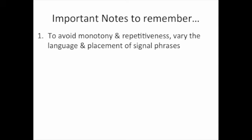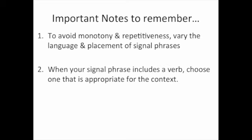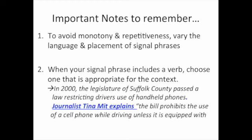There are some important ideas you need to remember if you're going to use a signal phrase. Number one, you don't want to use the same signal phrase over and over. To avoid monotony and repetitiveness, make sure you vary the language and the placement of your signal phrases. Number two, when your signal phrase includes a verb, you need to make sure you choose one that is appropriate for the context. For example, 'Journalist Tina Mitt explains' is appropriate, but you wouldn't want to say 'Journalist Tina Mitt exclaims,' because she's not exclaiming — she's simply explaining the statement. So you need to make sure you're using the appropriate verb in your signal phrase.